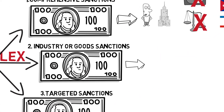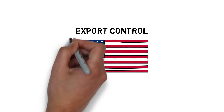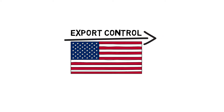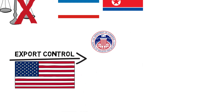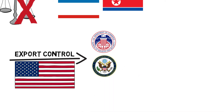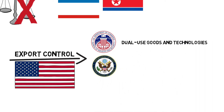Two: industry or goods sanctions. In addition to comprehensive sanctions, the United States government has imposed trade or goods sanctions on some countries. These come into play at two levels. First, export controls which place restrictions on the export of specific products and technologies of the United States. These are mainly implemented by the Bureau of Industry and Security (BIS) of the Department of Commerce and the U.S. State Department. BIS takes responsibility for the export control of dual-use goods and technologies, while the State Department is responsible for the export control of military products and technologies.